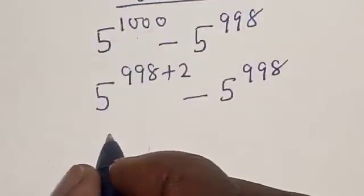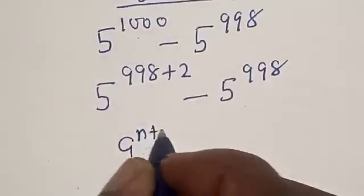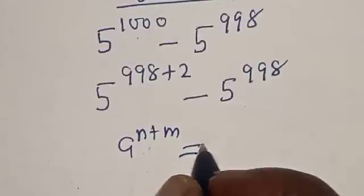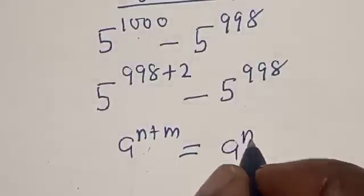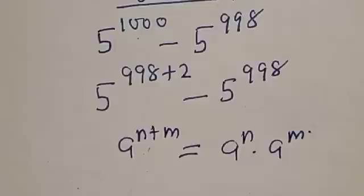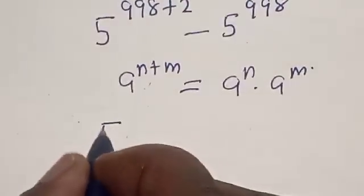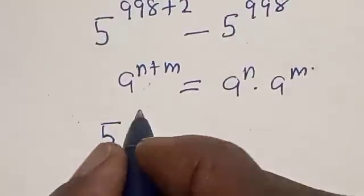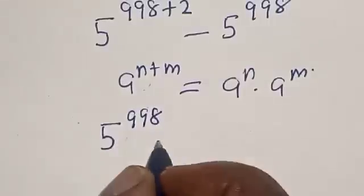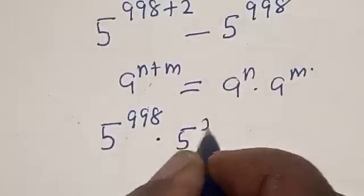Remember: if you have a raised to power n plus m, this is equal to a raised to power n multiplied by a raised to power m. Applying this, we get 5 raised to power 998 multiplied by 5 squared, minus 5 raised to power 998.